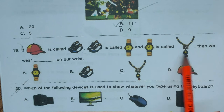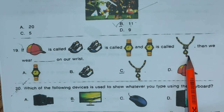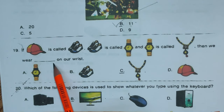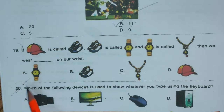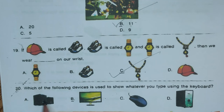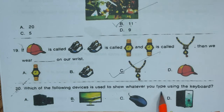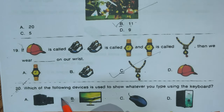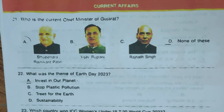Question 19: If hat is called shoes, and shoes is called watch, and watch is called necklace, then what do we wear on our wrist? Options: A) watch, B) shoes, C) necklace, D) hat. Correct answer is C, necklace. Question 20: Which of the following devices is used to show whatever you type using the keyboard? Options: A) speaker, B) monitor, C) mouse, D) CPU. Correct answer is B, monitor.